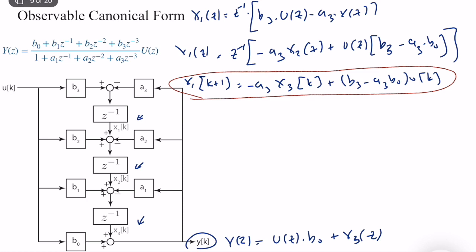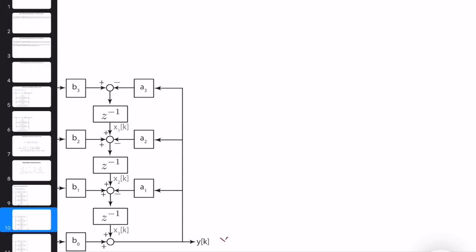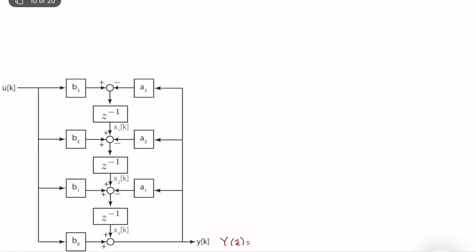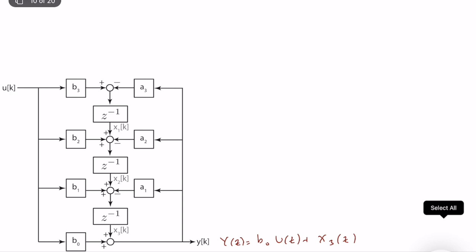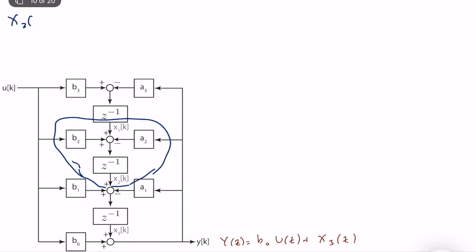So we computed x1. What we should do is the same thing for x2 and x3 and finalize our equations. Let's keep it here and move to the next page to better understand the results. So let's write it. y of z is equal to b0 times u of z plus x3 of z. So let's start with x2. We will concentrate on this part.